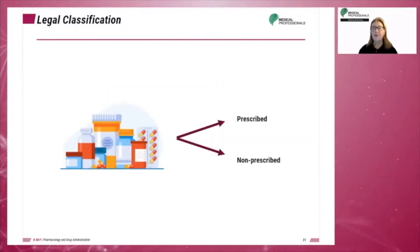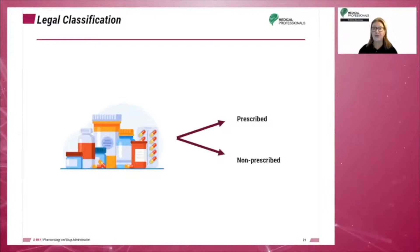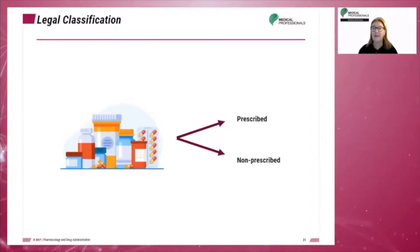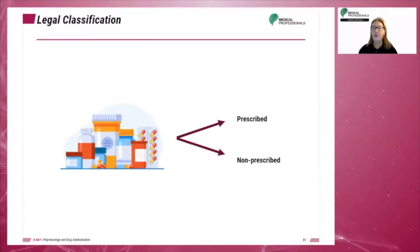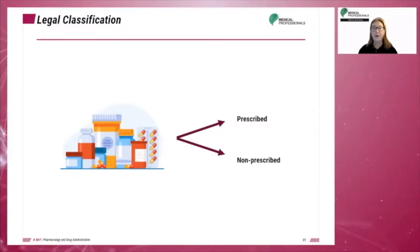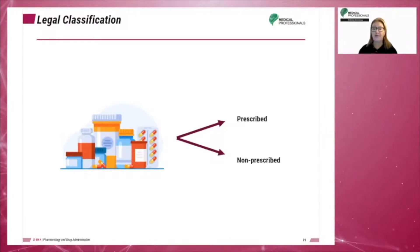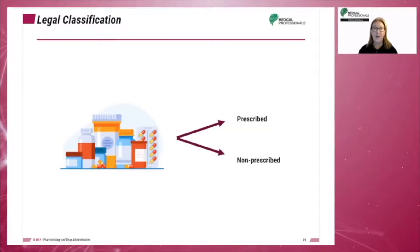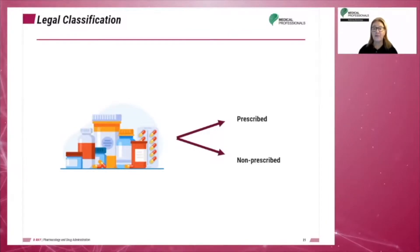According to federal laws, drugs are legally listed as prescriptions or non-prescriptions. Prescription drugs also have a higher legal classification. These are controlled substances. Prescribed drugs are also called legend drugs, and require an order by a legally authorized health practitioner. Prescriptions must specify the name and age of the patient, the name of the drug, and the dosage regimen to be followed. Prescription drugs are dispensed by a licensed pharmacist or doctor.